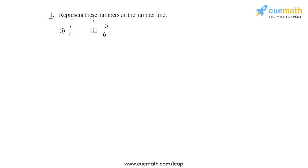In question 1, we have to represent these two numbers that you see on the number line. The first number is 7 by 4, and the second number is minus 5 by 6, and we have to represent both of these on the number line. So let's start with the first part.